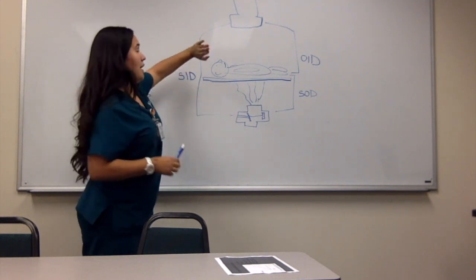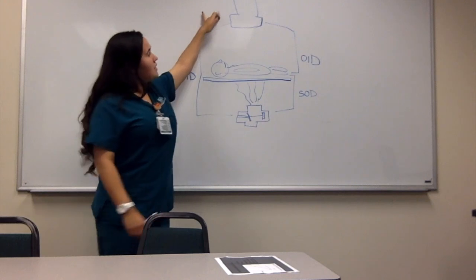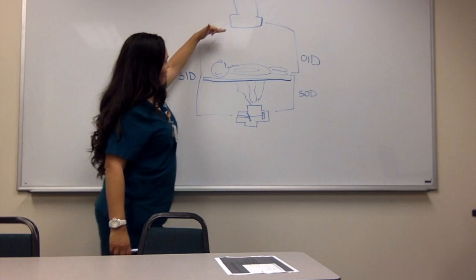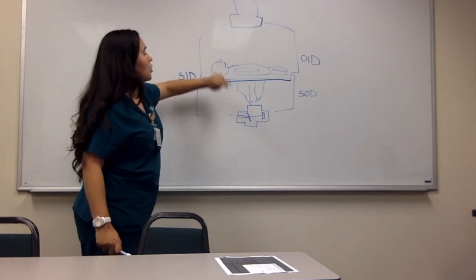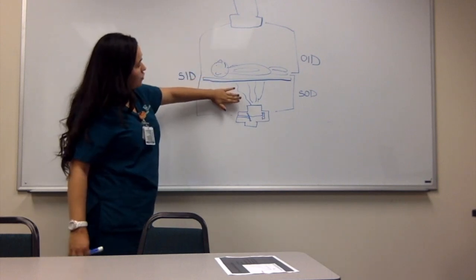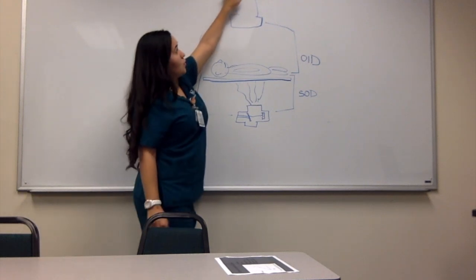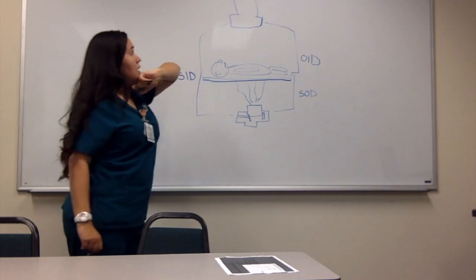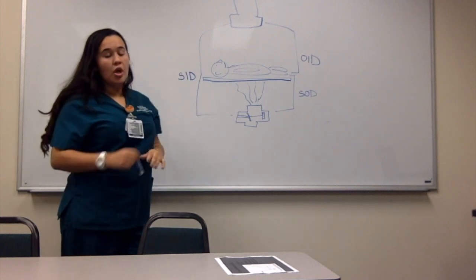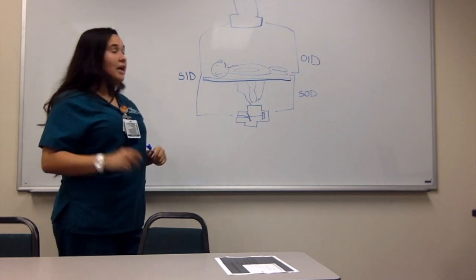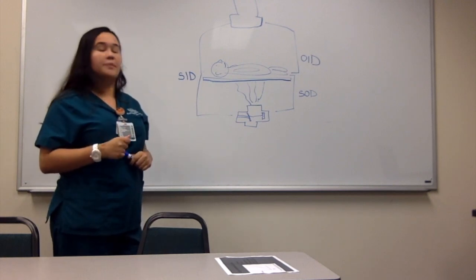The tube is at the bottom and the tower is at the top, and this has the image receptor. The closer the image receptor is to the patient, the quicker the x-ray photons reach the tower and it gets to the ABC, which is automatic brightness control, which is also kind of like an AEC chamber. And as soon as it reaches that, it shuts off the system.